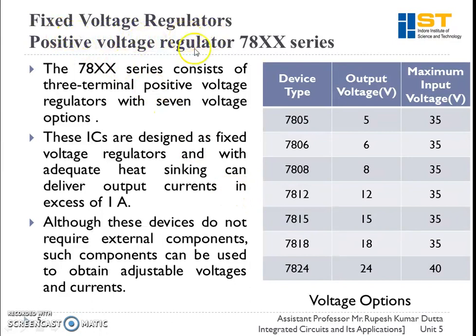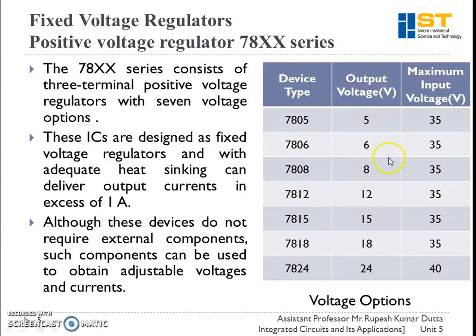Fixed voltage regulators come in the 78XX series, where XX denotes the output voltage supplied. The 78XX series consists of three-terminal positive voltage regulators with seven voltage options. The last two digits of the IC number indicate the output voltage, and the table also shows the maximum input voltage that can be applied. These ICs are designed as fixed voltage regulators and with adequate heat sinking can deliver output currents in excess of one ampere. Although they do not require external components, such components can be used to obtain adjustable voltages and currents.